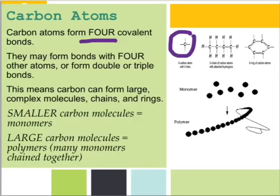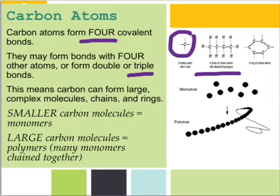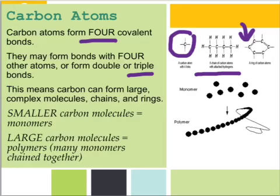If you look here, we have a carbon with lines going in all four directions — that would be a carbon making four bonds. Carbon could bond to a bunch of other carbons and then have a whole bunch of hydrogens. Carbon could also make a double bond where they share four electrons, or even a triple bond where they share six electrons, each indicated by the number of lines shown. The most important thing to understand is that carbon can make big, complicated molecules — chains and rings — and all the large, complicated molecules in living things are composed of carbon.